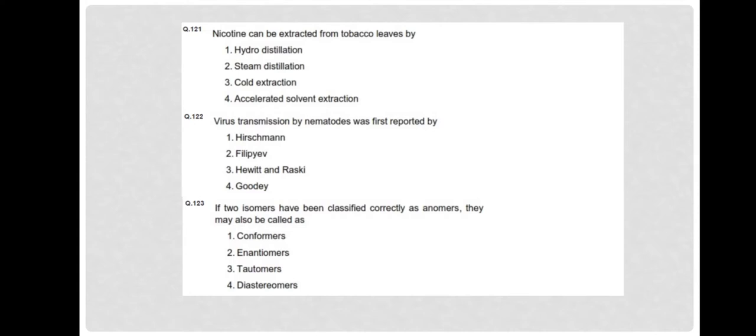Question 121: Nicotine can be extracted from tobacco leaves by steam distillation method. Question 122: Virus transmitted by nematode was first discovered by Hewitt and Rasky. In 1858, the first virus known to be transmitted by nematode is grapevine fanleaf virus, GFLV, transmitted by Xiphinema index, discovered by Hewitt and Rasky in 1858.